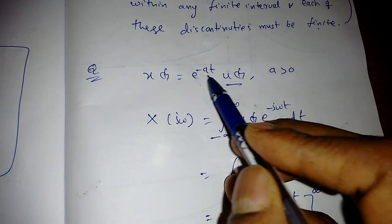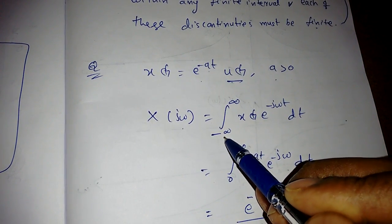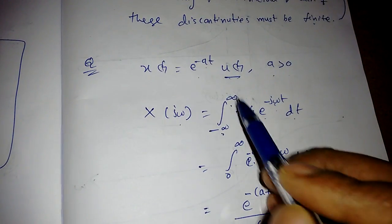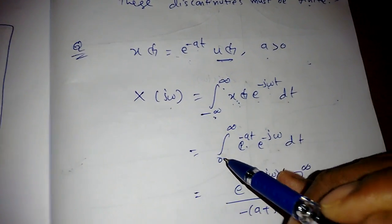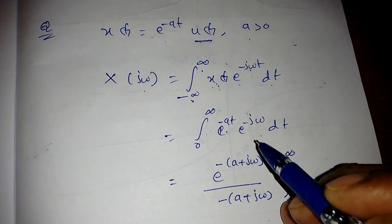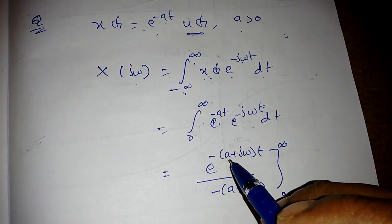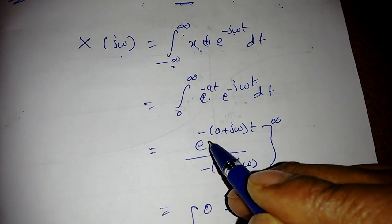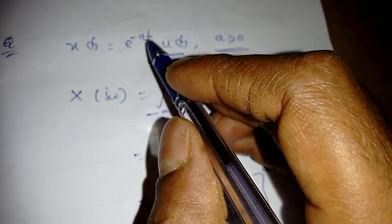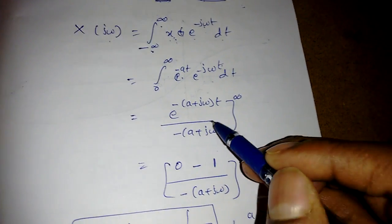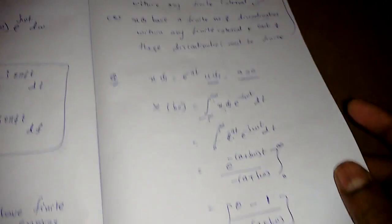Now let's look at an example. If x(t) = e^(−at)·u(t) with a > 0, then by the Fourier transform formula, X(jω) = integral from 0 to infinity of e^(−at) · e^(−jωt) dt. Combining the exponents gives e^(−(a+jω)t). Substituting the limits — at infinity the term goes to zero because a > 0 — we get X(jω) = 1/(a + jω).